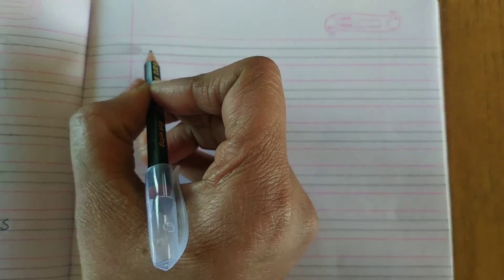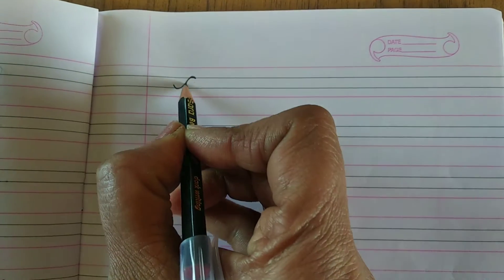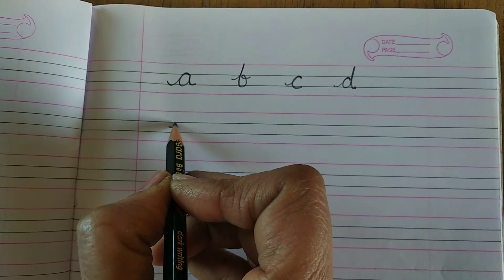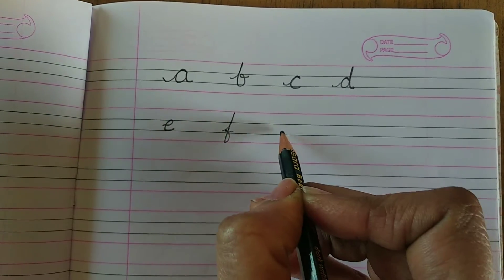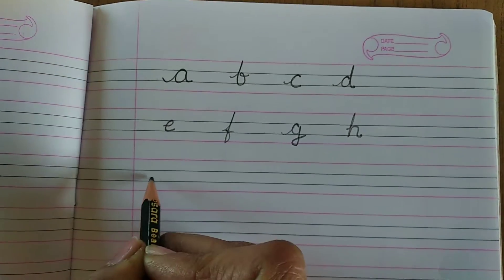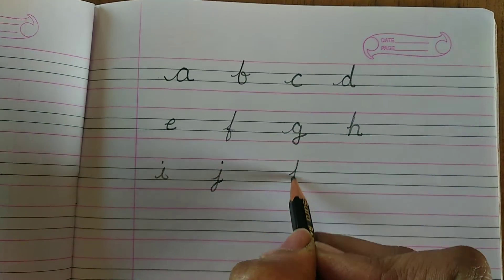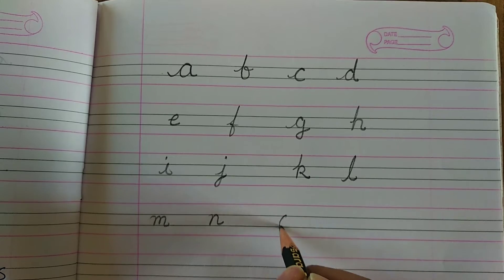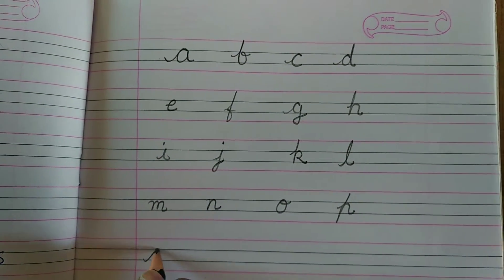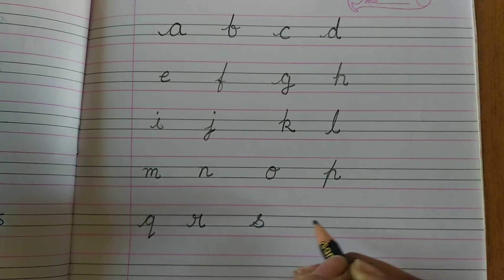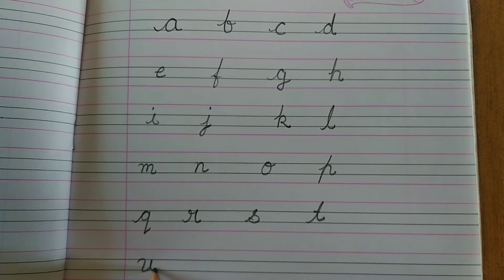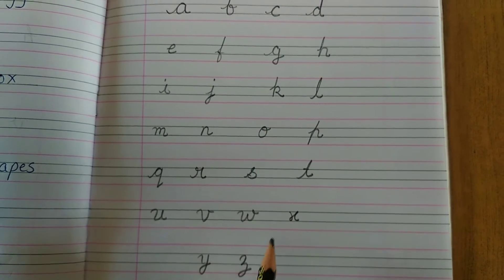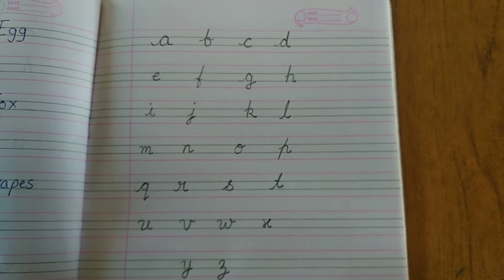So children, first I will write for you. You will see how I'm writing cursive small letters, okay? A B C D E F G H I J K L M N O P Q R S T U V W X Y and Z. You see children how teacher has written? This is how you have to write, okay?